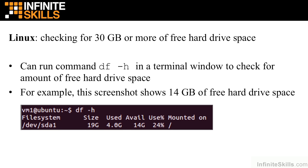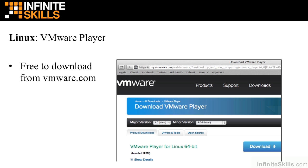Next, let's check that our Linux machine has at least 30 gigabytes of free hard drive space. We can do that by running the command 'df -h' in a terminal window, which shows how much hard drive space is available. In this case, the machine only has 14 gigabytes of free space, which is not enough for all the course exercises — we'd want to free up space or use a different computer. Finally, for our Linux machine, we're going to need the VMware Player, which is free to download from VMware.com.